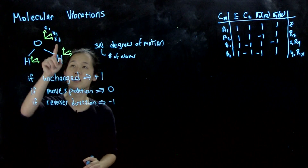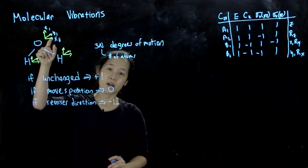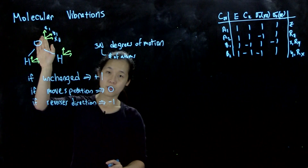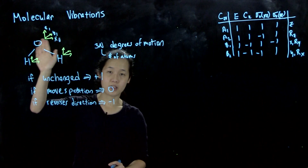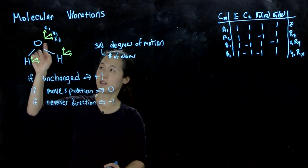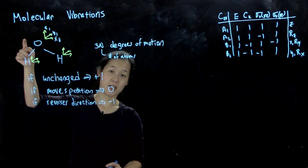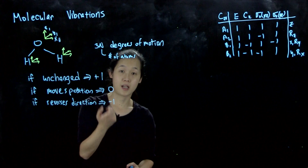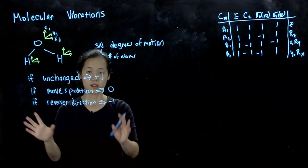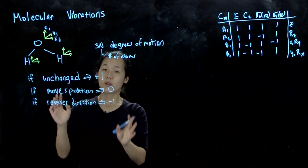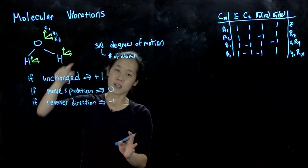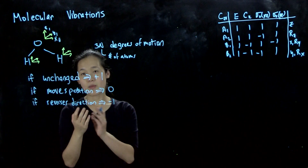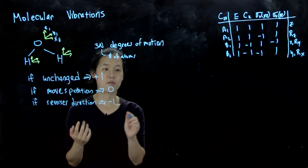For example, for x₁ or y₁ vectors on the oxygen atom: when you do a C₂, they don't change position because they're still on the oxygen atom, but they've switched direction — x₁ becomes −x₁, y₁ becomes −y₁ — so that's why they contribute −1 to the character. From there, we were able to treat all 9 of these vectors in this 9×1 vector and sum them up to form our reducible representation.